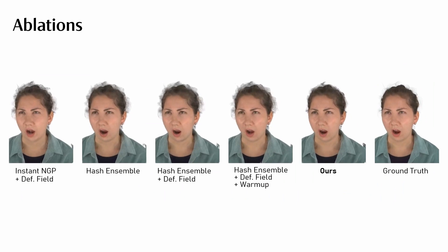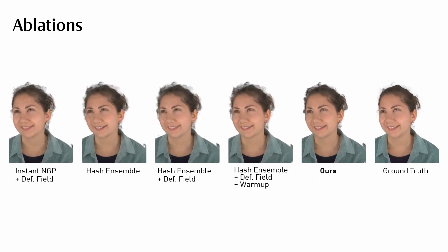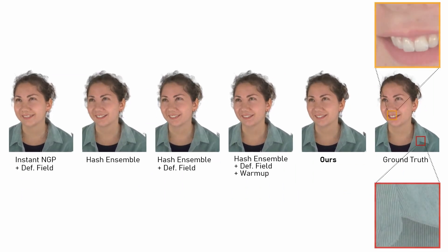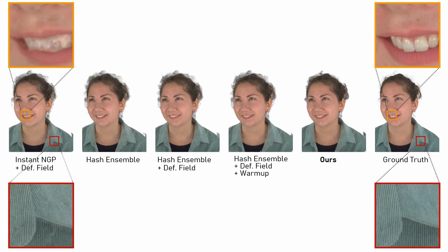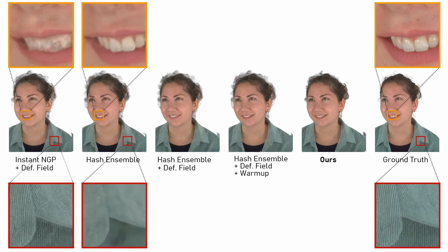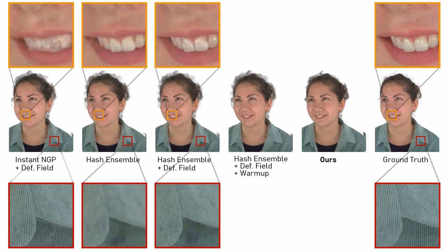Here, we ablate the different components of our model. Combining instant NGP with a deformation field can produce sharp detail in rigidly moving areas of the scene, but struggles with more challenging motion. On the other hand, employing an ensemble of hash encodings can better deal with complex motions, but generally produces blurrier reconstructions. Combining both components leverages the strengths of these architectures, but still does not achieve sharp detail in some areas.